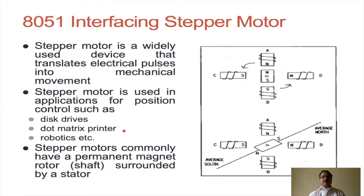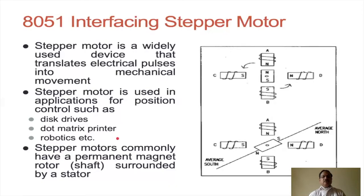We know stepper motors are used in dot matrix printers. Nowadays, stepper motors are also largely used in robotics. In industries, robots are preferred. Nowadays robots are also used in restaurants to serve food to customers, and in hospitals to deliver medicine to patients, which keeps human interface low as compared to earlier days.